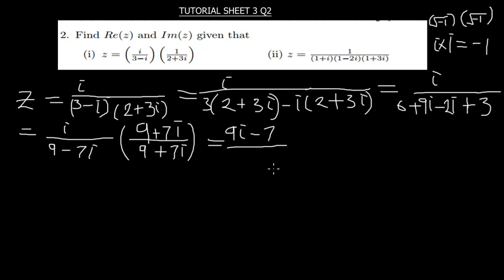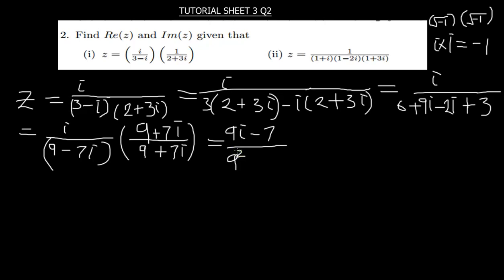So the denominator is 9 squared minus (7i) squared. 9 squared is 81. Then 7 squared is 49, and i squared gives negative 1. So it becomes 81 minus negative 49, which gives us 81 plus 49.